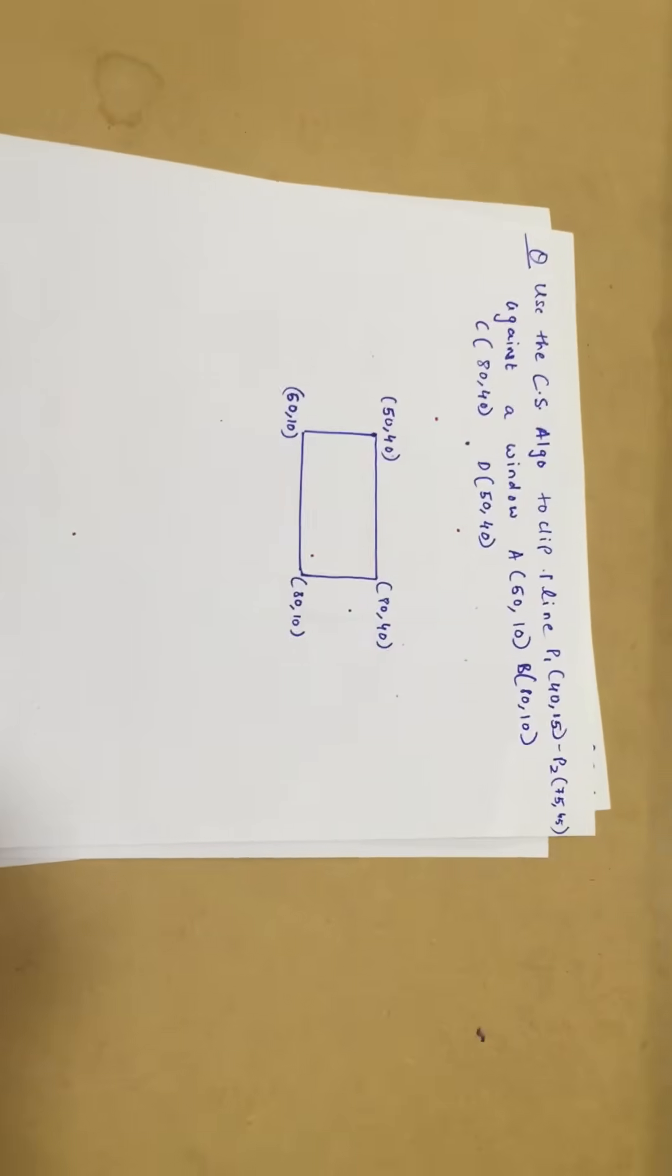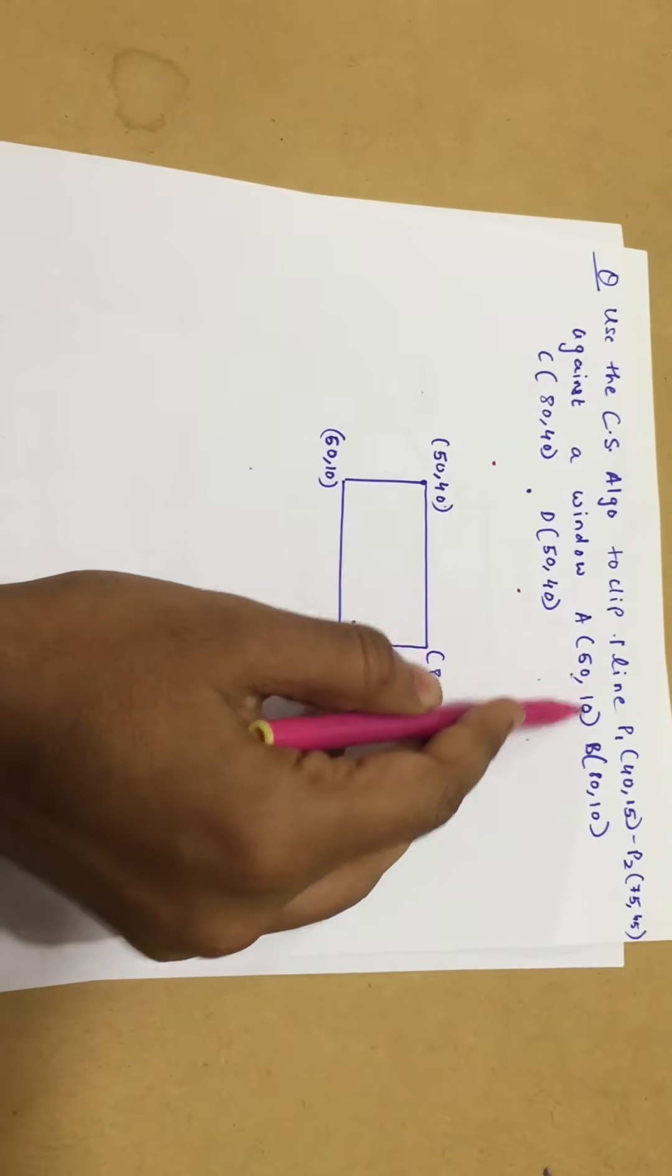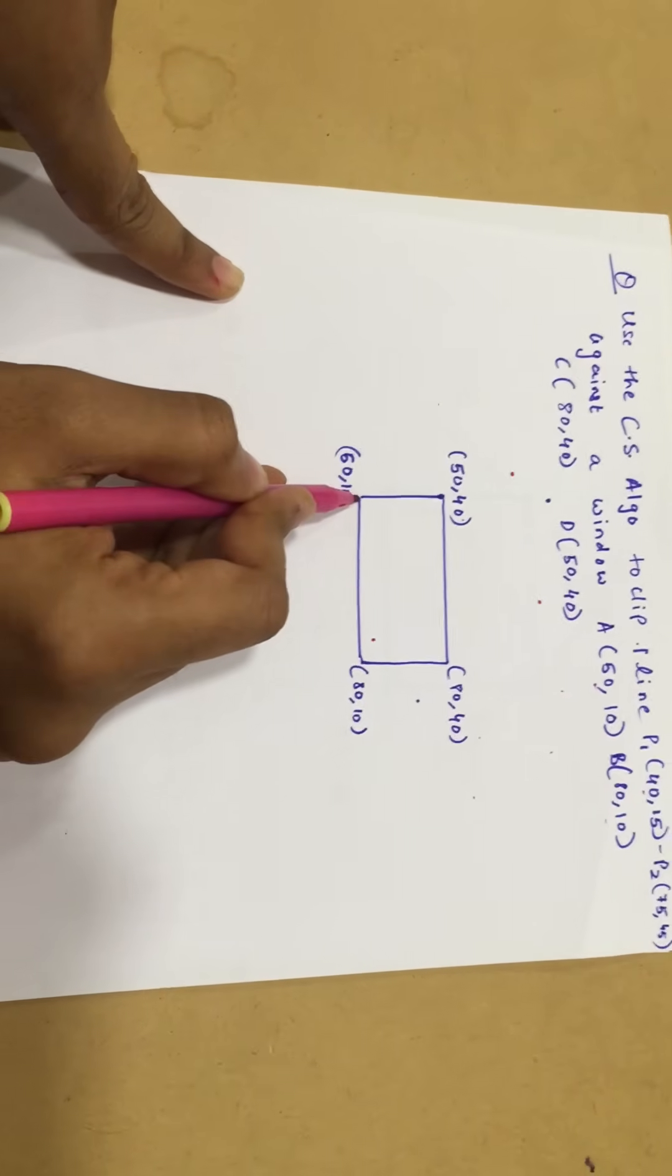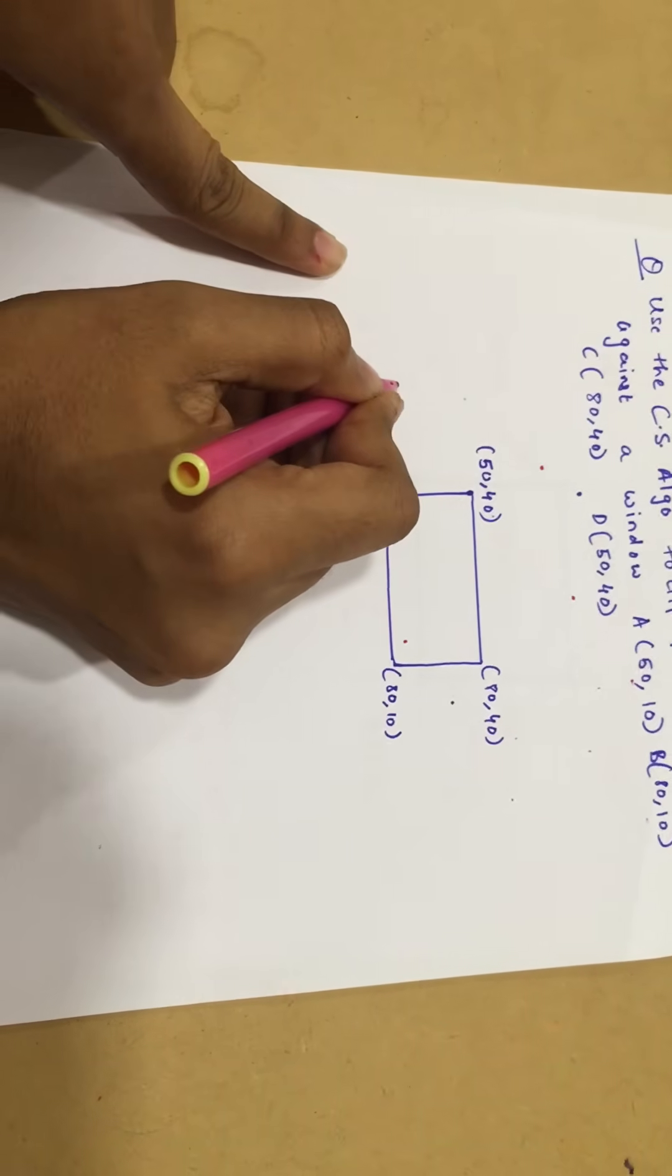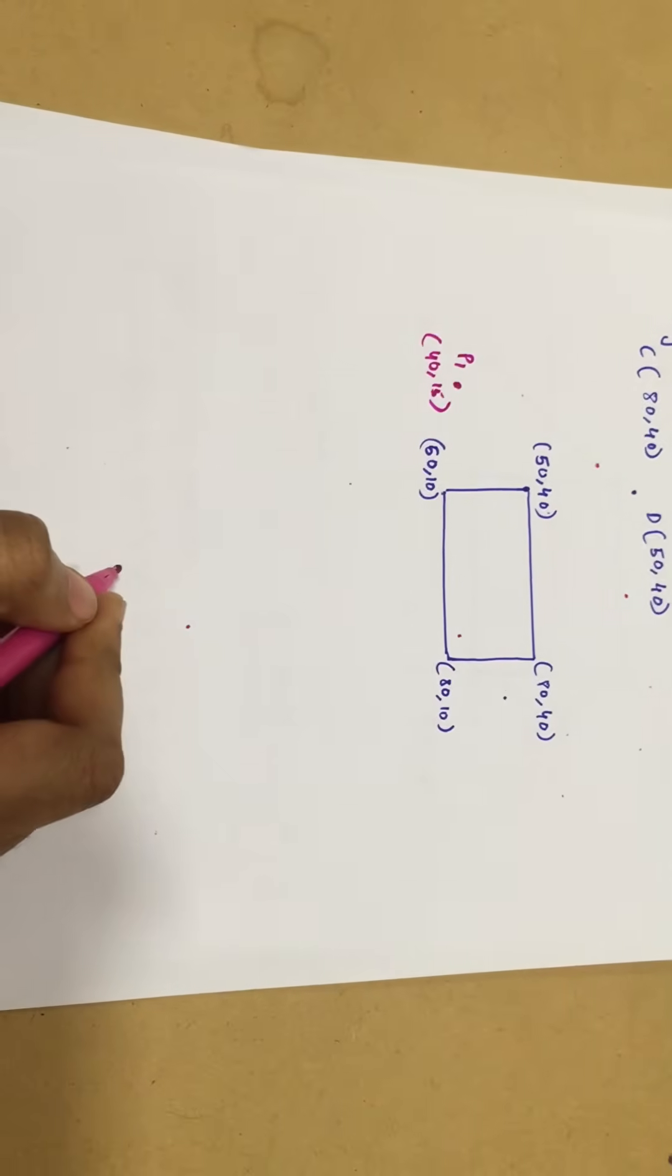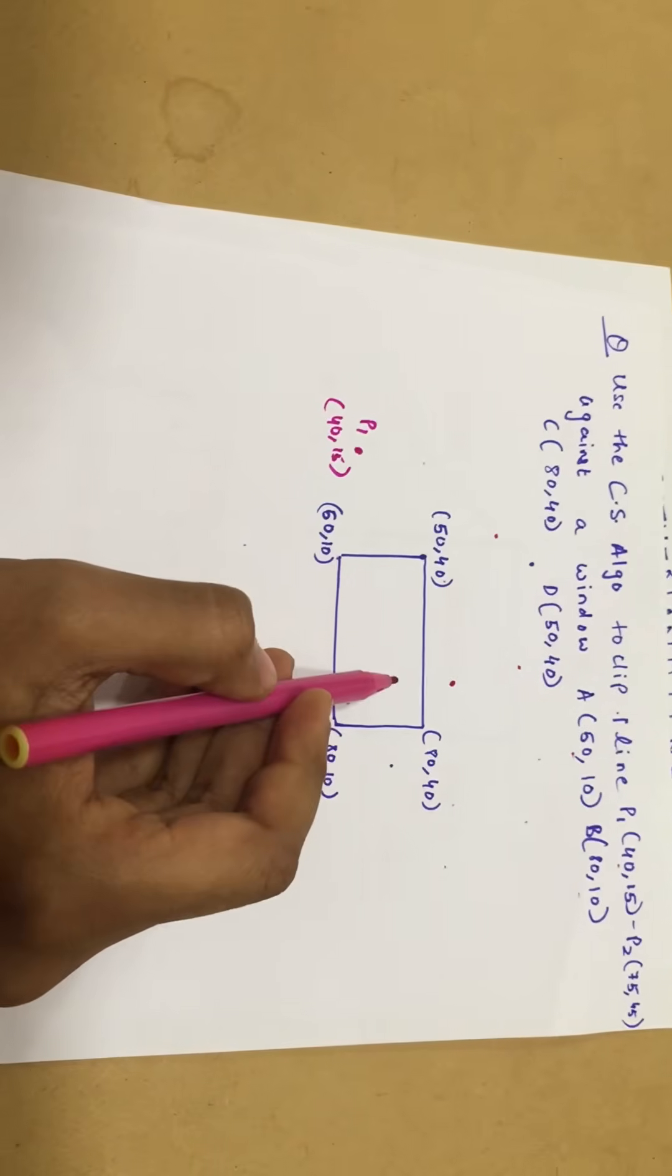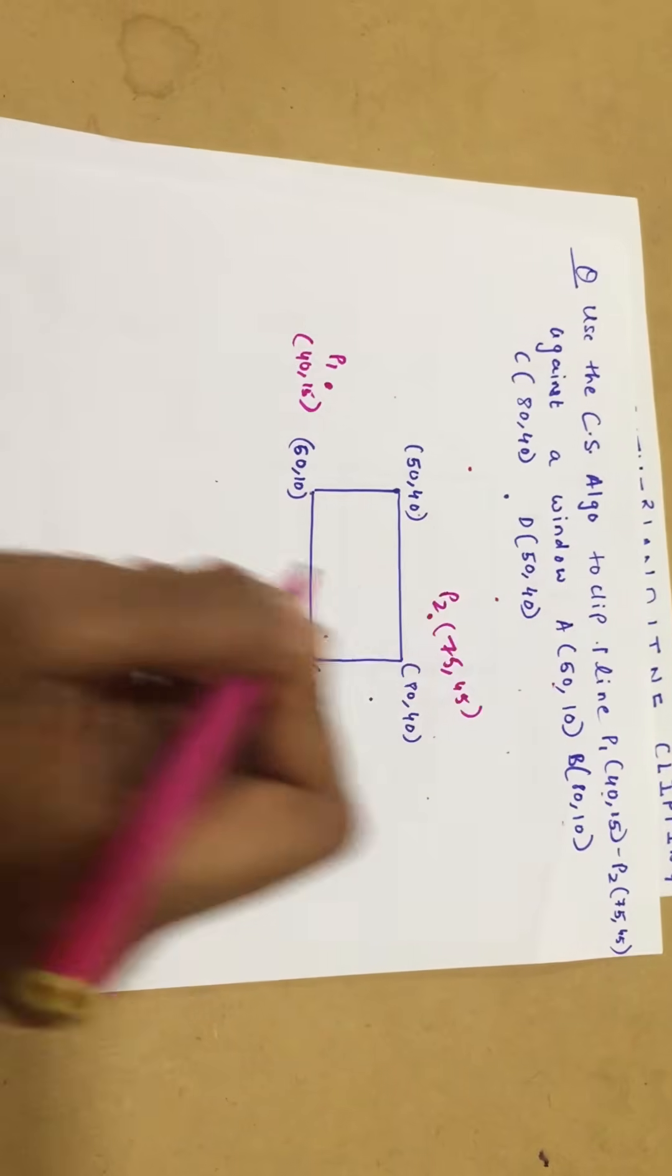Now we have to use the Cohen-Sutherland algorithm to clip the line P1, P2 against a window, which is this given here. I have plotted the points here. We're also going to plot the points P1 and P2. P1 is 40, 15, so it should be lying somewhere around here. Let's call this point P1. And we have P2 which is 75, 45. That should be around here. And this is my point P2.